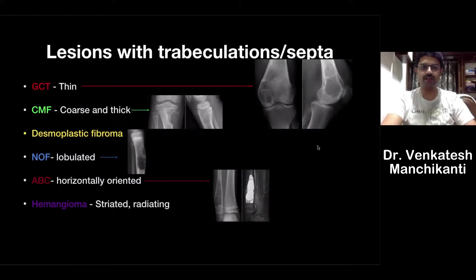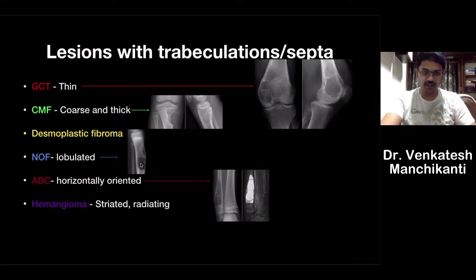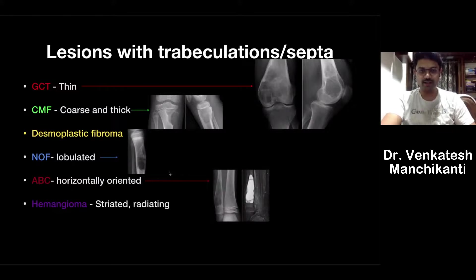Some lesions have characteristic trabeculations or septa. Giant cell tumor shows thin trabeculations. Chondromyxoid fibroma has coarse, thick trabeculations compared to GCT. Non-ossifying fibroma and desmoplastic fibroma show lobulated septa. Aneurysmal bone cyst invariably has septa, typically horizontally oriented to the long axis — visible even on MRI. Hemangioma shows radiating trabeculations, most commonly in the skull.